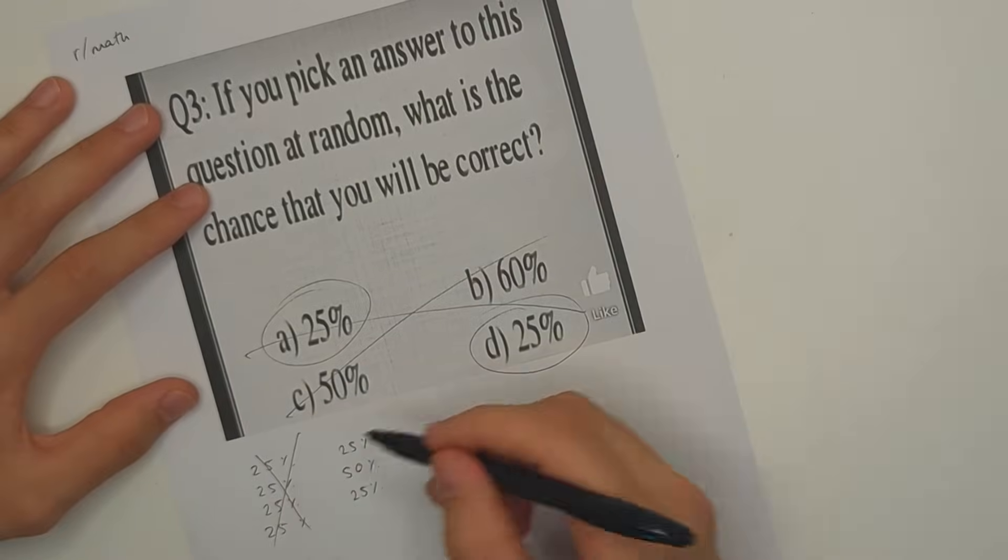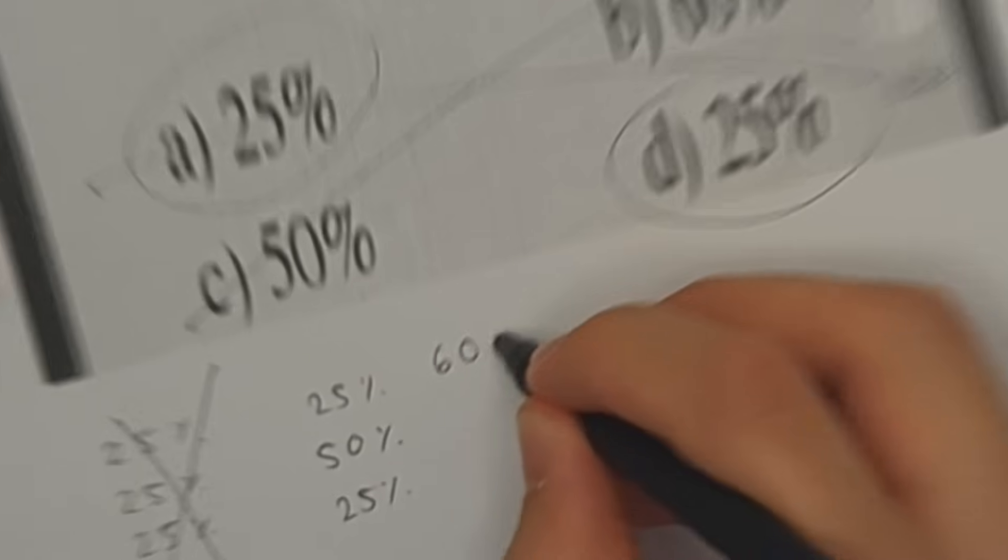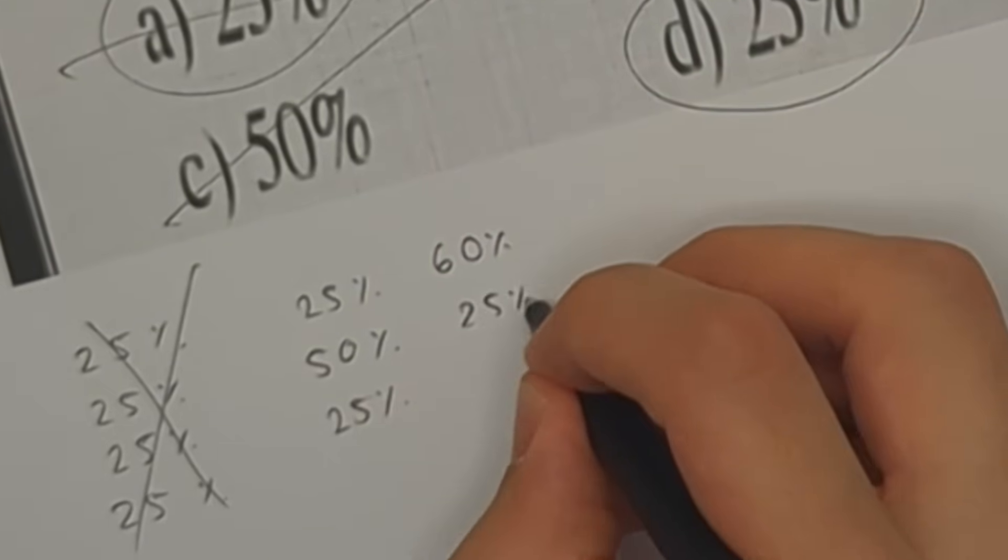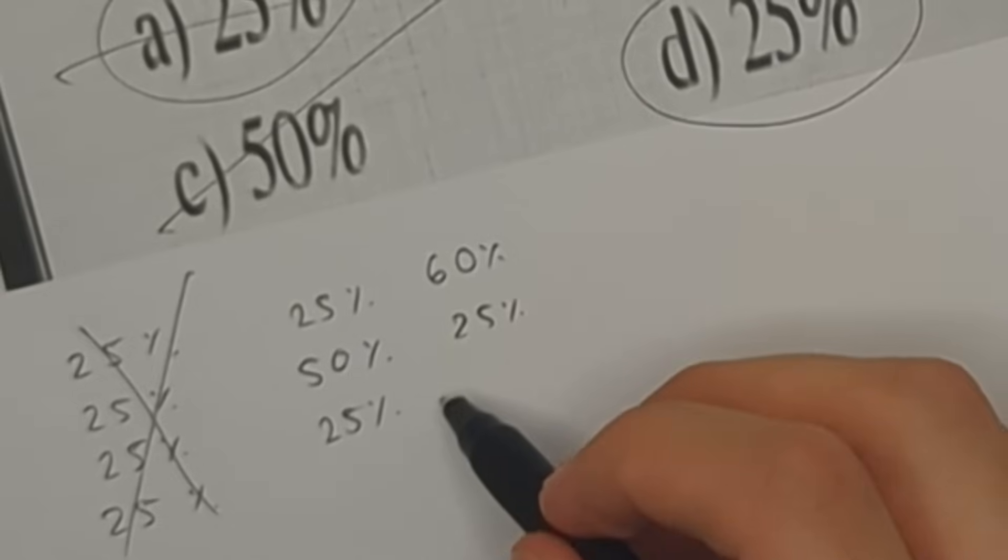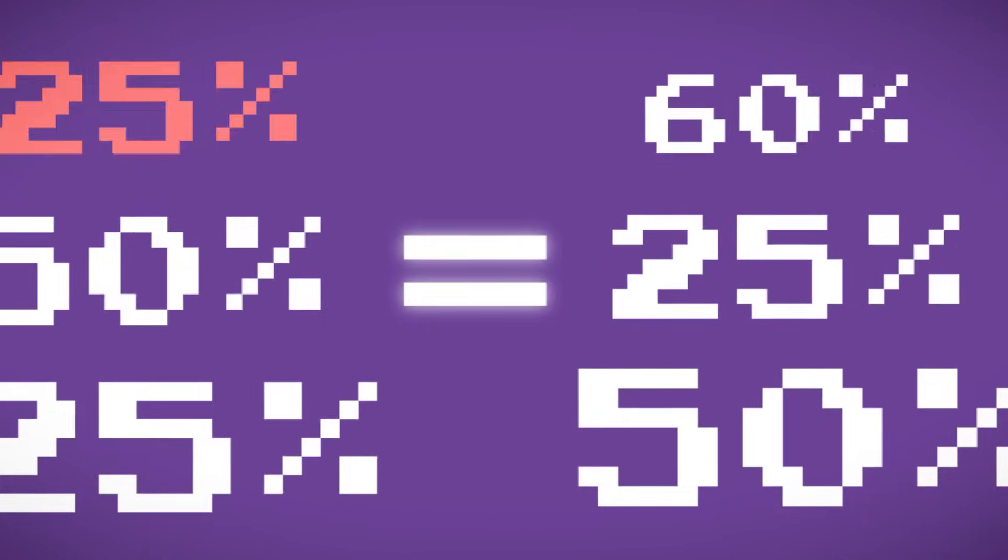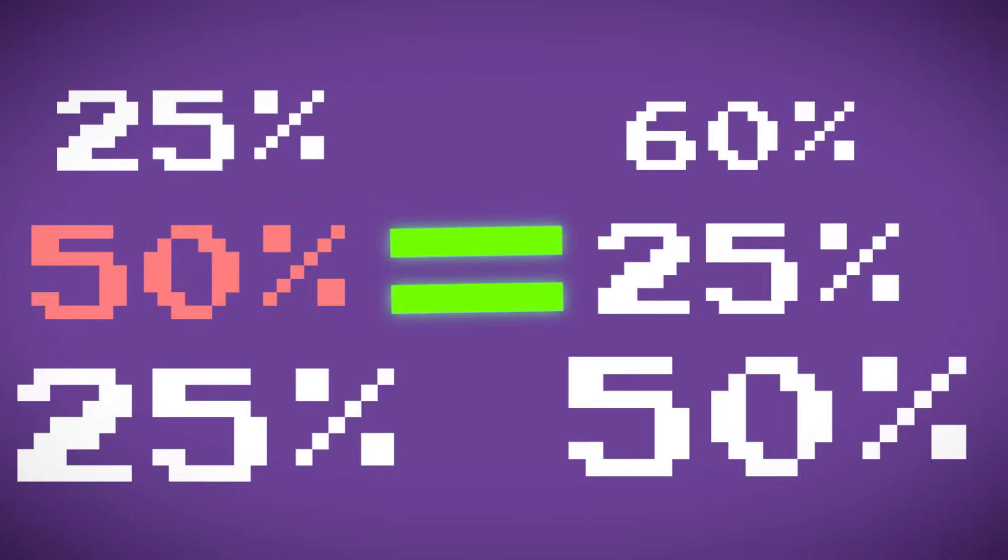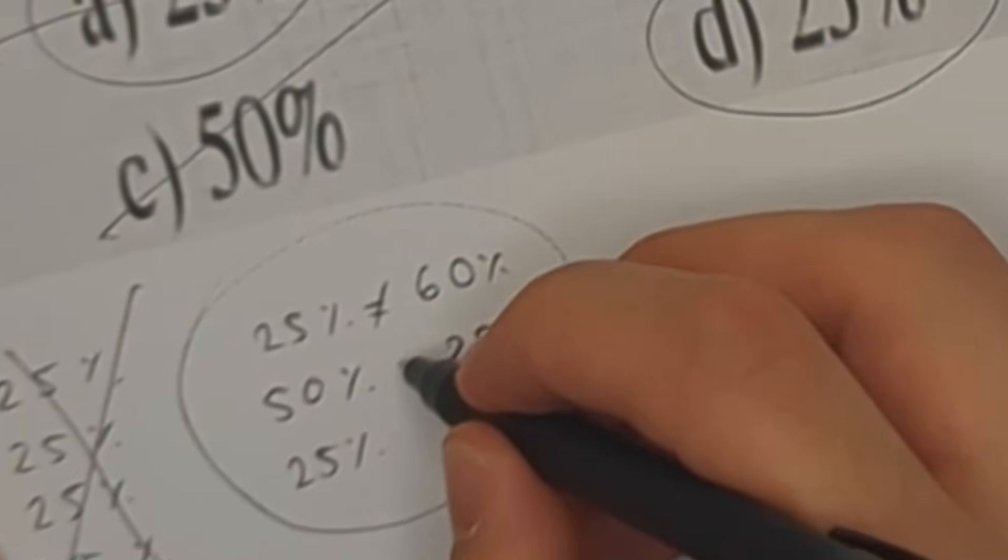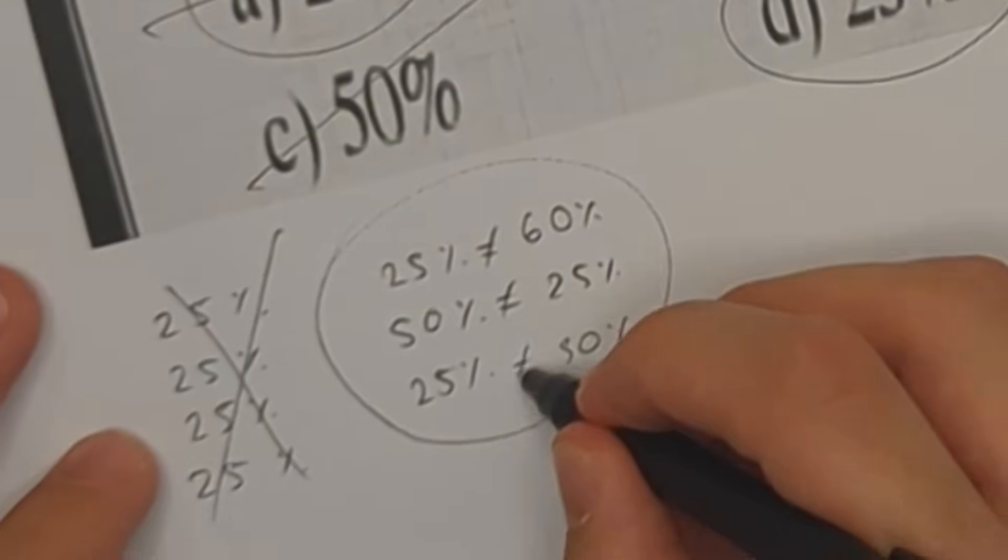Now the option that is 25% is 60%, and then 50% we have 25%, and then another 25% we have is 50%. So the question really is asking which of these is the same, which on the left is equal to the one on the right, and the answer is actually none of these. 25% is not equal to 60%, 50% is not equal to 25%, and 25% is not equal to 50%.